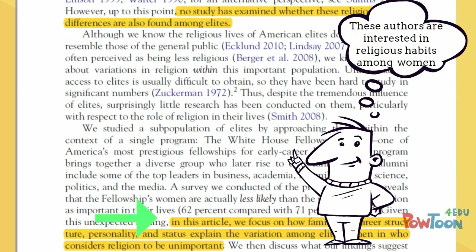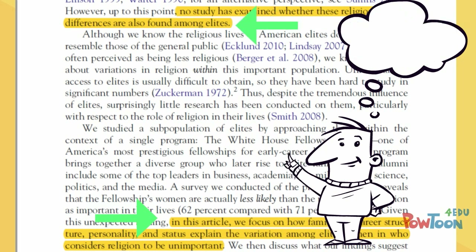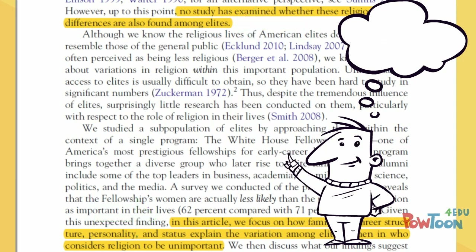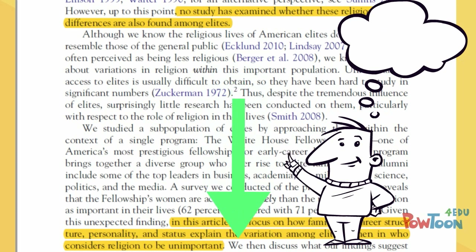Further, in the initial portion of the article, the authors will often report what is called a gap in the literature — a question that has not been examined and is worth further study. The literature review will go on to highlight studies and theories that are relevant to the current study, but will also add further support to the gap that exists.